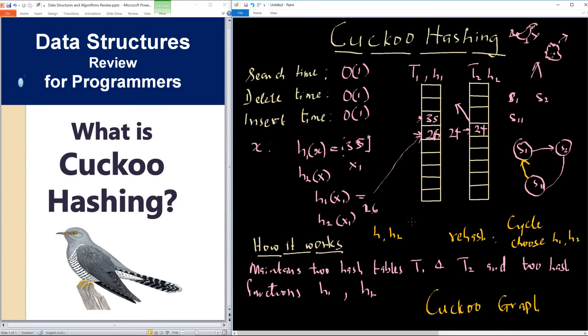So I'm going to stop here. This is how cuckoo hashing works. It's very efficient because everything—search, delete, and insert—is constant time. And it's peculiar because it maintains two hash tables.